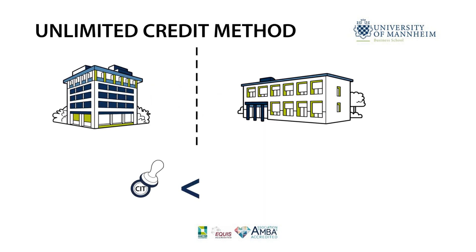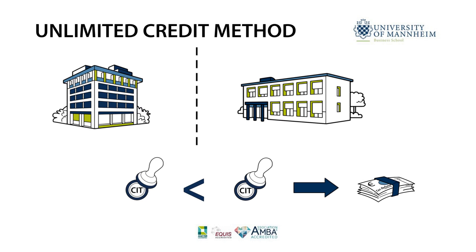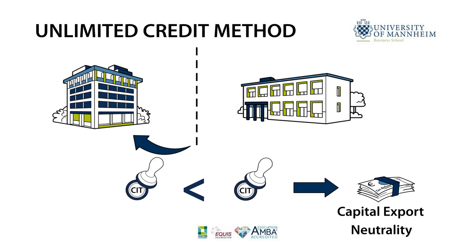If the domestic taxes are lower than the foreign tax liability, the unlimited credit method allows for a refund of the excess tax credit to achieve capital export neutrality from the perspective of the domestic country.